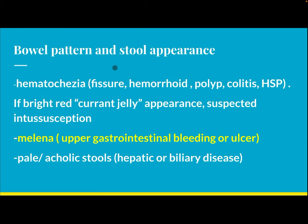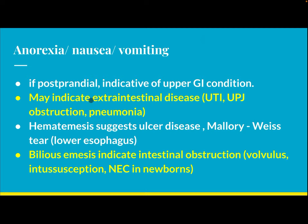Hematochezia may indicate fissure, hemorrhoid, polyp, colitis, or Henoch-Schönlein Purpura. A red currant jelly appearance is associated with suspected intussusception. Melena suggests upper GI bleeding or ulcer. Acholic stool suggests hepatic or biliary disease.